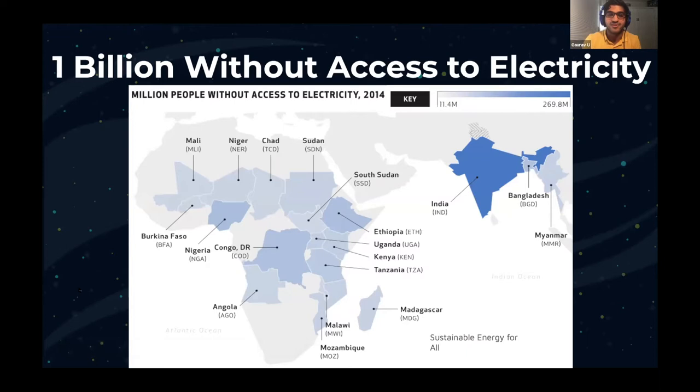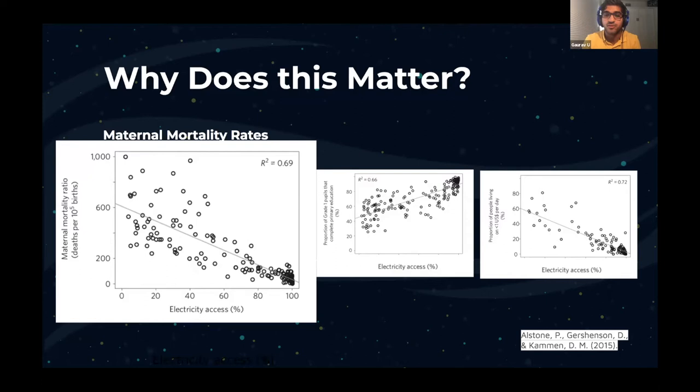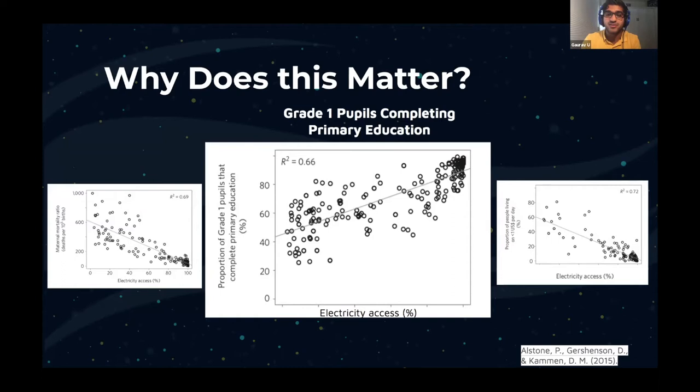A 2015 study from UC Berkeley showed us that there is an inverse correlation between energy access and maternal mortality, meaning improved access can ensure that more mothers survive during childbirth. This study also showed us that energy access is directly correlated with education. The number of students in grade one who finished their primary education shows a direct correlation with energy access.